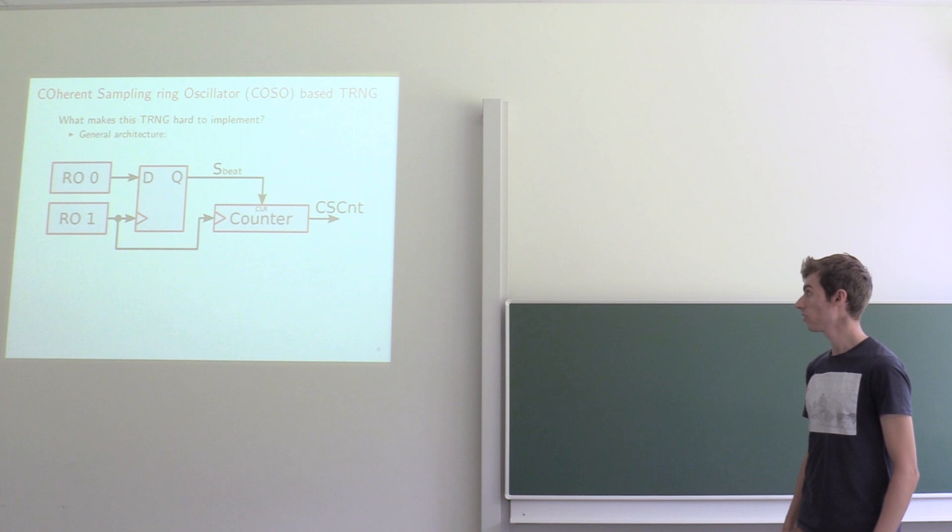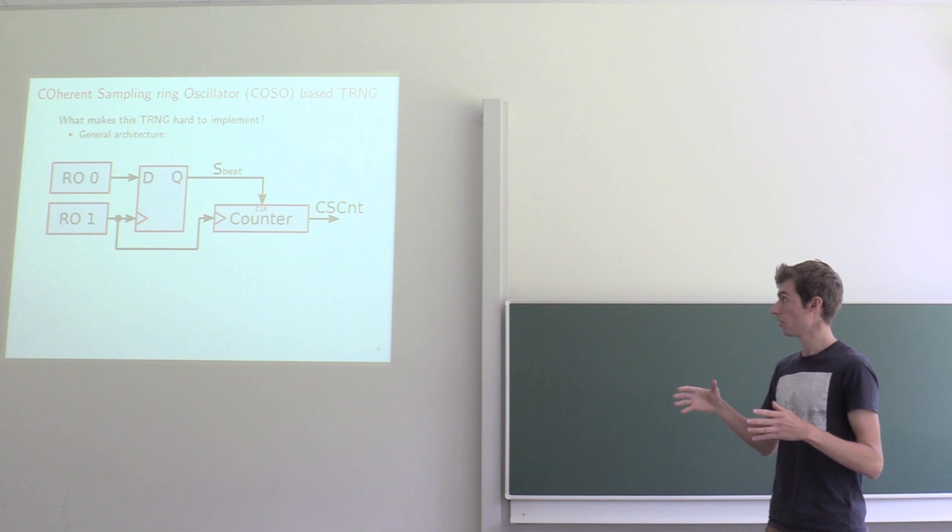And out comes a discrete random variable which is random because of the jitter present in your two free-running ring oscillators. And what we actually want is to have a large variance in this counter output as possible.